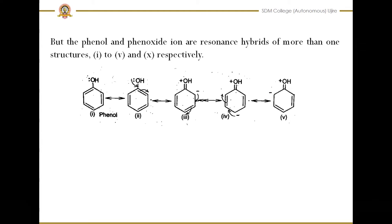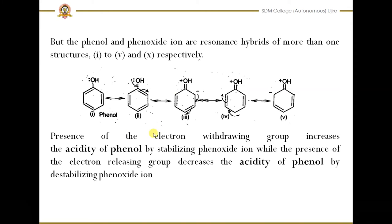When a compound is stable after donating its proton, that stability depends on the greater number of resonance structures. That is why phenols are more acidic than alcohols. Additionally, the presence of electron-withdrawing groups such as a nitro group increases the acidity of phenols by stabilizing the phenoxide ion, while the presence of electron-releasing groups such as CH₃ or other alkyl groups decreases the acidity of phenols by destabilizing the phenoxide ion.